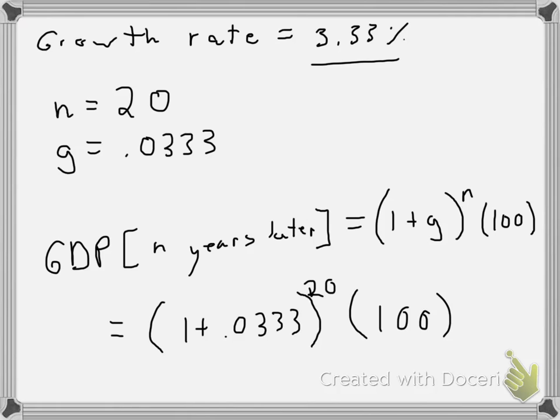If we were to calculate that out, this part right here would be 1.0333 to the 20th power, or 1.925. And we would times that by 100 to get our actual amount, and that would come out to be 192.5%.